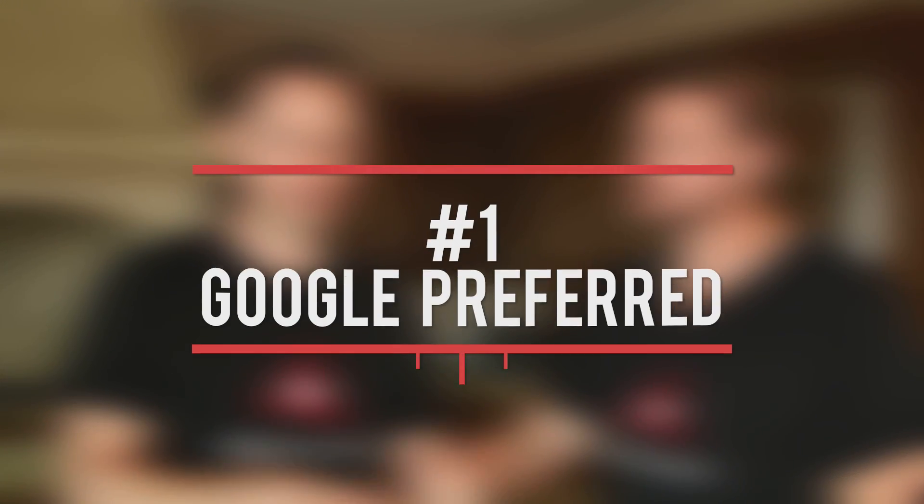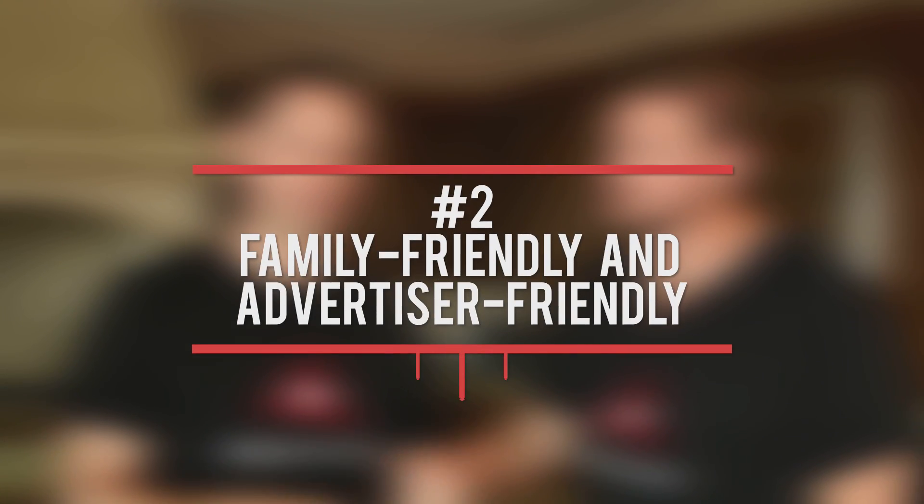What are the differentiators that really determine the difference between the high-end and the low-end payout options? There are a lot of factors. One would be Google Preferred. This is set up for the top YouTube channels who are generating consistent watch time for large audiences, and also determined to be family friendly and advertiser friendly — which is very important, because if you produce a video and YouTube doesn't consider it advertiser friendly, your video will be demonetized. Which means even if you get 10 million views, you won't be able to generate any revenue from AdSense.